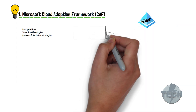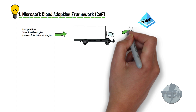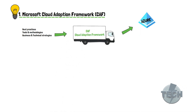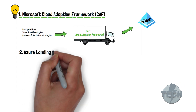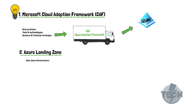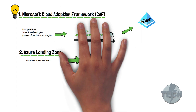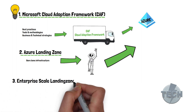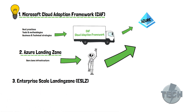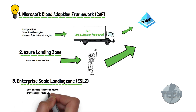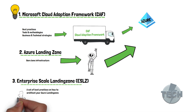The CAF guides you through the start of the journey with business drivers on how to successfully end up in Azure. Azure Landing Zone — you can think of an Azure Landing Zone as a bare bone infrastructure set up in order for you to put your workloads in the cloud. The Enterprise Scale Landing Zone from Microsoft, ESLZ, is a set of best practices on how to architect your Azure landing zone.